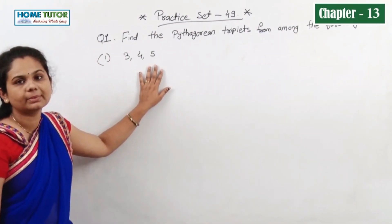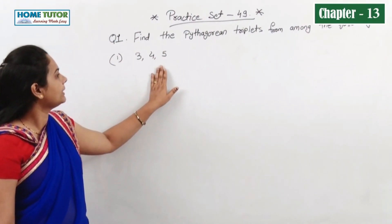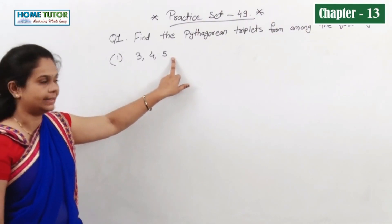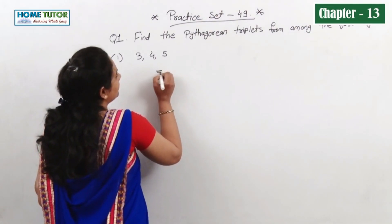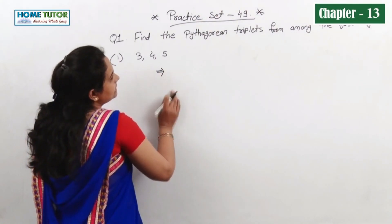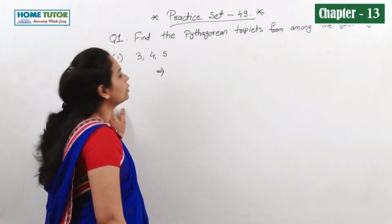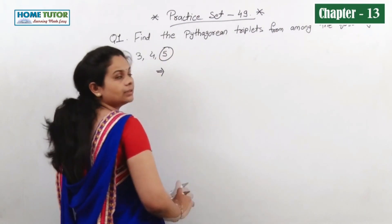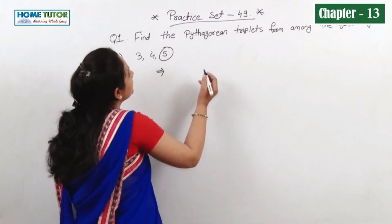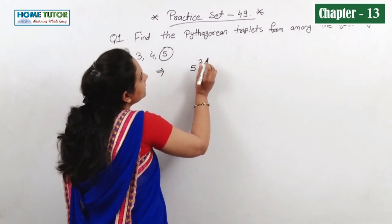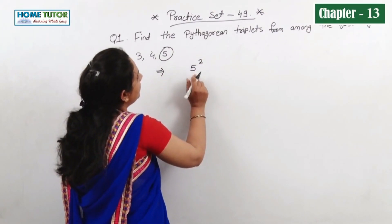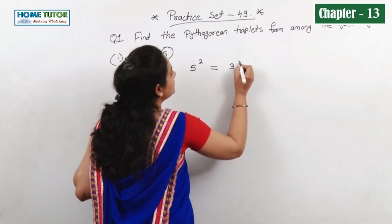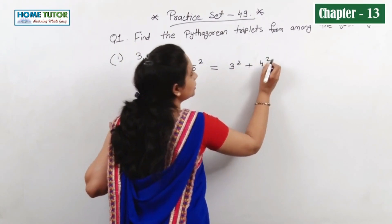We have to find out if the given three natural numbers form a Pythagorean triplet or not. We have seen the rules — how to find out. First, find the biggest number. The biggest number here is 5. So according to this rule, 5 squared should be equal to 3 squared plus 4 squared.